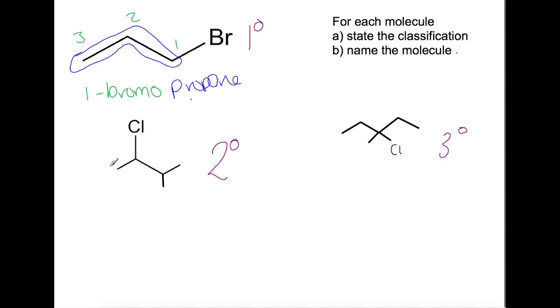Looking at the secondary example, the longest chain is one, two, three, four here. So that will be based on butane. We're then going to have a look at numbering from the end closest to the halogen. So we've got one, two, three, four. So the name is going to start 2-chloro. Then we're going to have a look at the other branch. So we've got another branch here which is a methyl and it's on number three. So that's going to be 2-chloro-3-methylbutane.